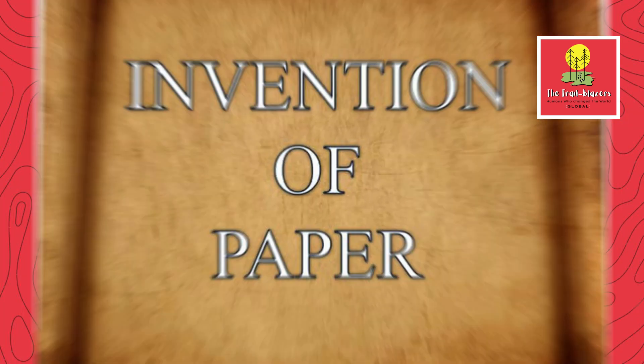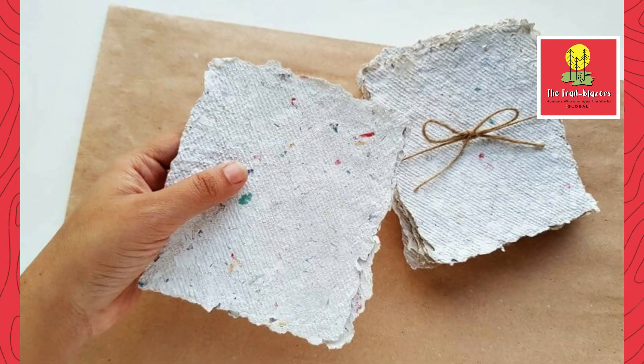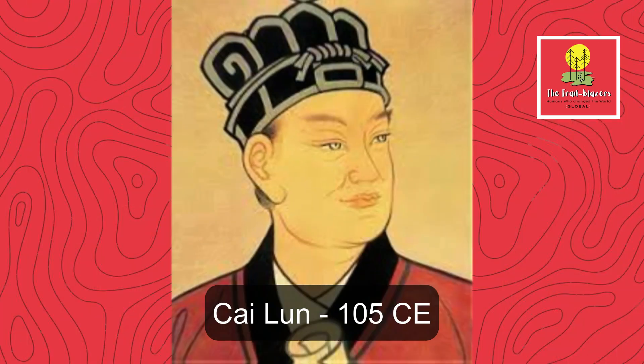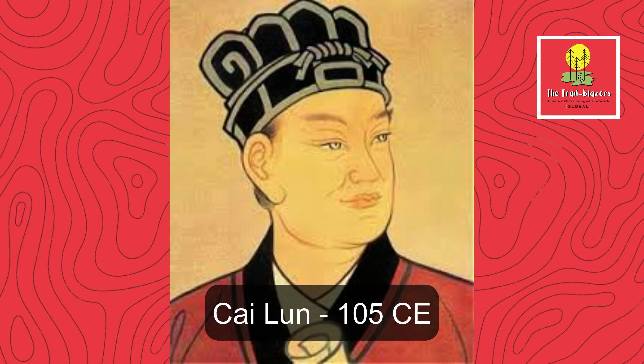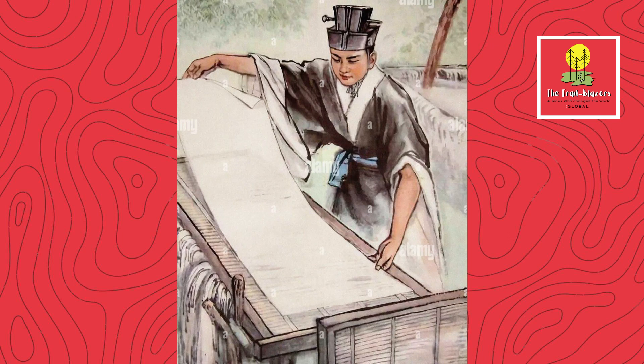The invention of paper as we know it today is widely attributed to Kai Lun, a court official in China during the Eastern Han Dynasty. Around 105 CE, Kai Lun developed a process of creating paper by pulping plant fibers. This method produced a lighter, more versatile material compared to the existing writing materials like bamboo strips and silk.